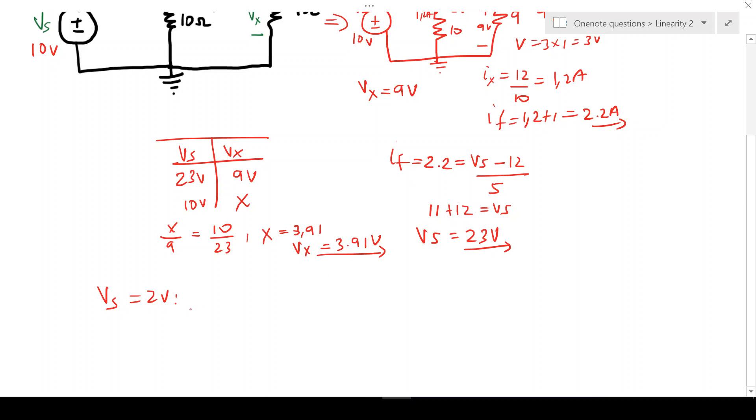Because linearity states that there's a linear relationship between voltage and current. So we've already calculated the relationship, right? We know that Vx and Vs, when I assumed 9 volts, I got 23 volts. So this ratio won't change. But what's changed is the source value, which is now 2 volts. And I can now calculate X from that changed source value.